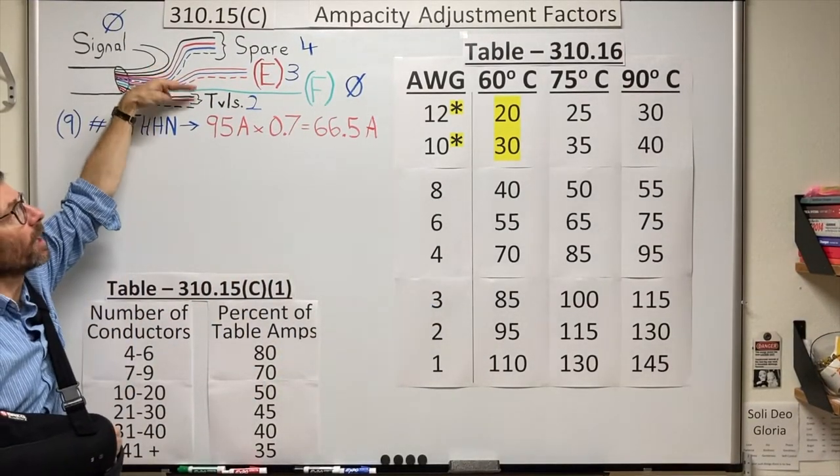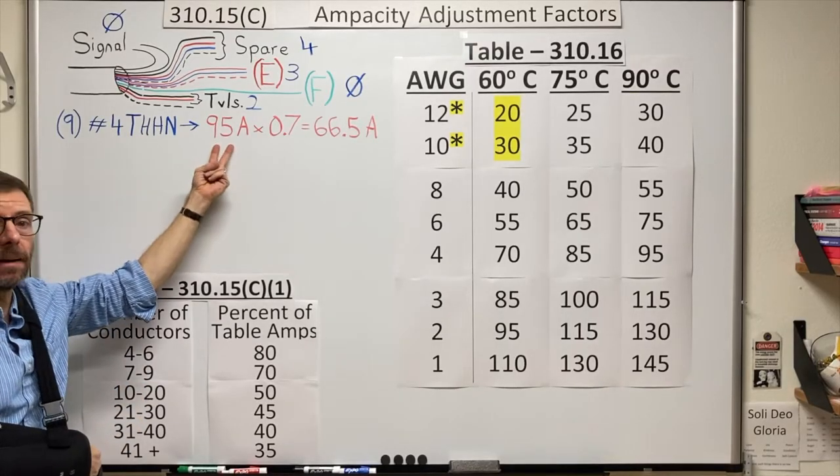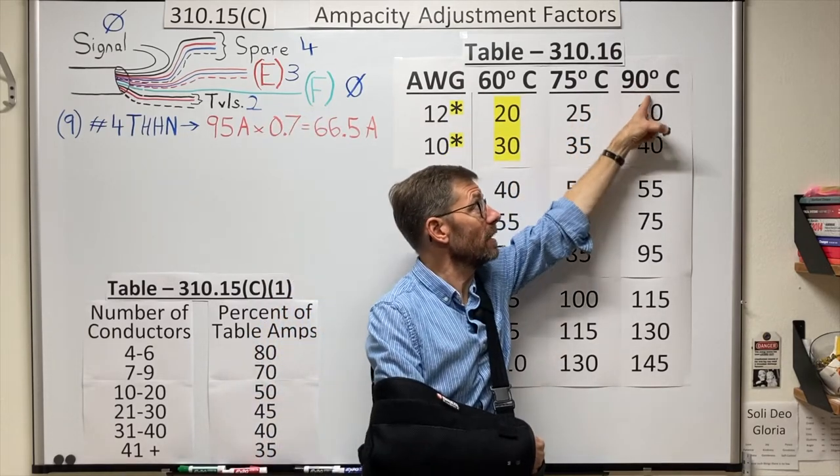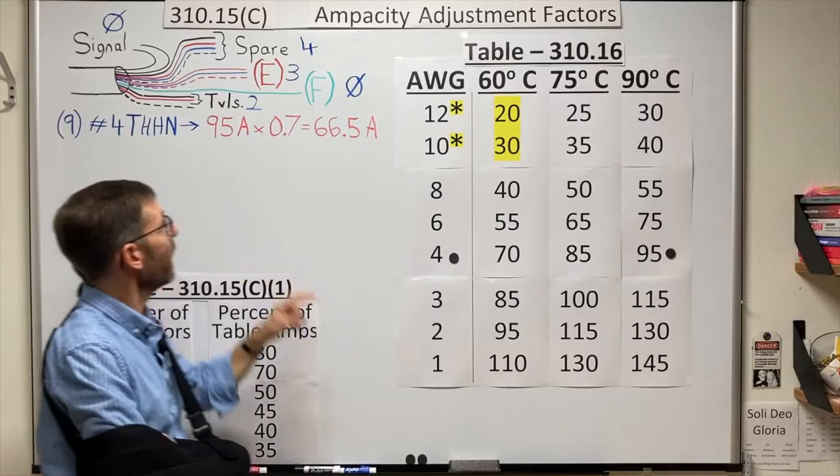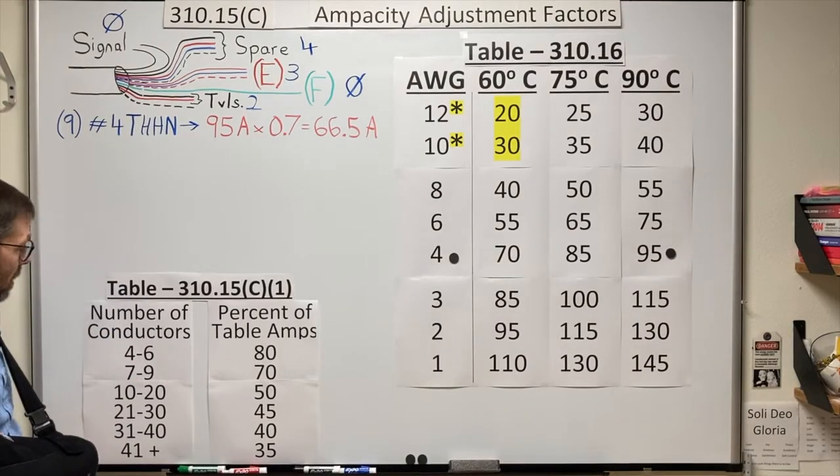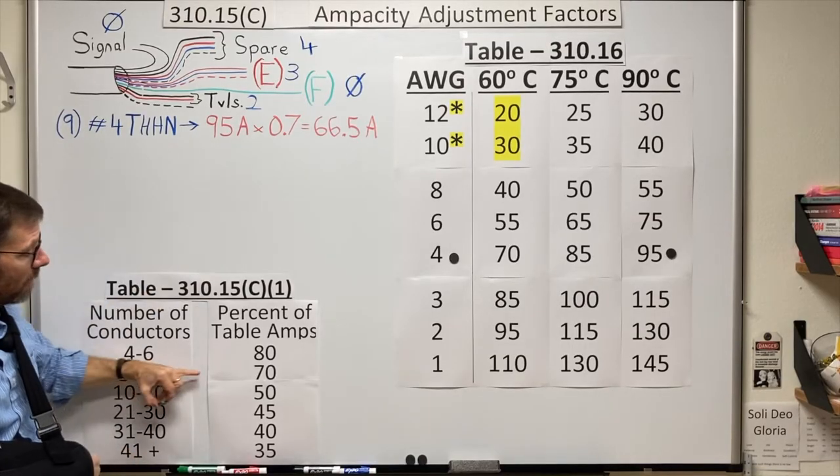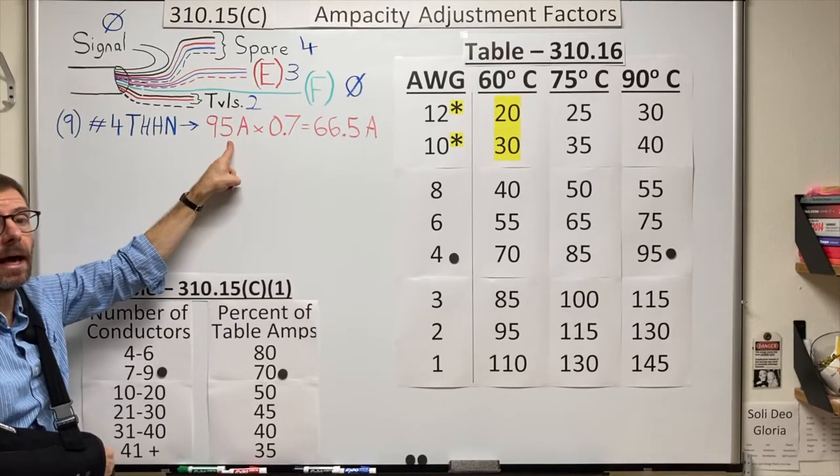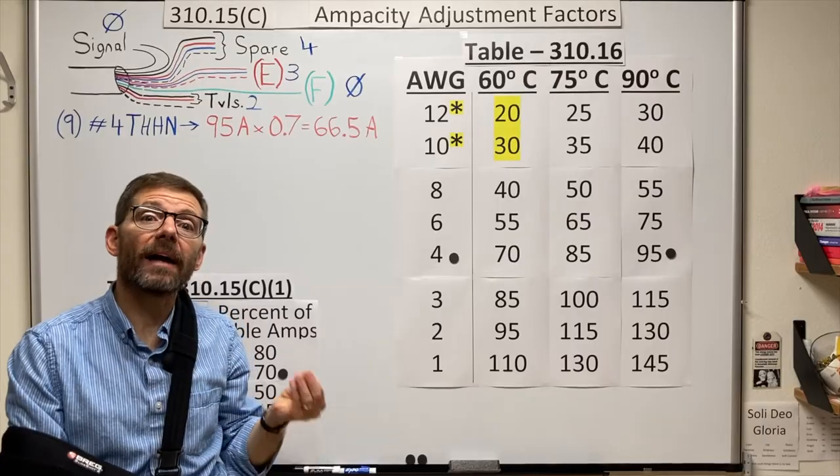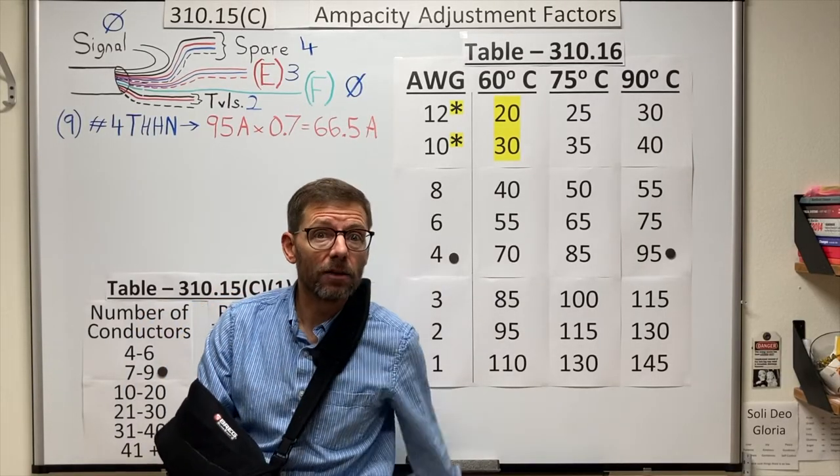Let's start by assuming all these wires are the same size. If they're all number four THHNs, the basic process is to take the conductor's initial ampacity from my ampacity tables. The number four wire, THHN being a 90 degrees Celsius insulation, is good for 95 amps. But because my conditions of use have changed, I now have nine current carrying conductors. I need to use this table here, and each of these conductors is now limited to 70 percent or 0.7 of their original ampacity. Giving a new ampacity of 66.5 amps for each of those conductors. That's their max load under these conditions of use. And those conductors would need to be protected accordingly by the rules back in 240.4.